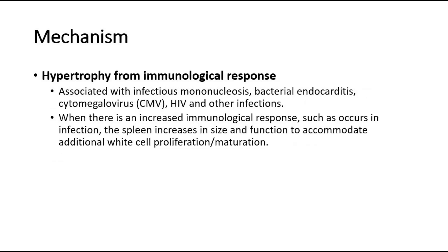First, we look at the mechanism of hypertrophy from immunological response. This is associated with infectious mononucleosis, bacterial endocarditis, cytomegalovirus, HIV, and other infections. When there is an increased immunological response, such as an infection, the spleen increases in size and function to accommodate additional white cell proliferation and maturation. Hence, there is splenomegaly.